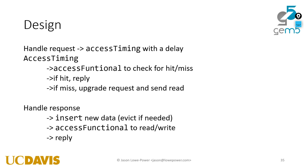The design of the cache: when handle request comes in we call access timing with a delay. In access timing we do the functional check separately. If it's a hit we reply with the data. If it's a miss, we need to upgrade the request from say a 64-bit request to a full cache line size request. Then in handle response we need to insert that data into the cache when we get the response from memory, and then call access functional to get the data out or write the data, and reply.